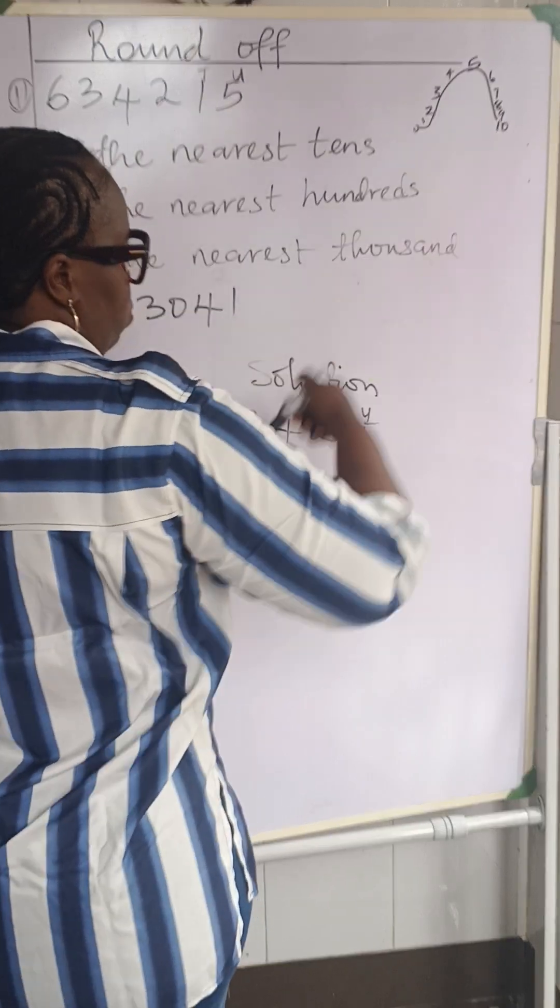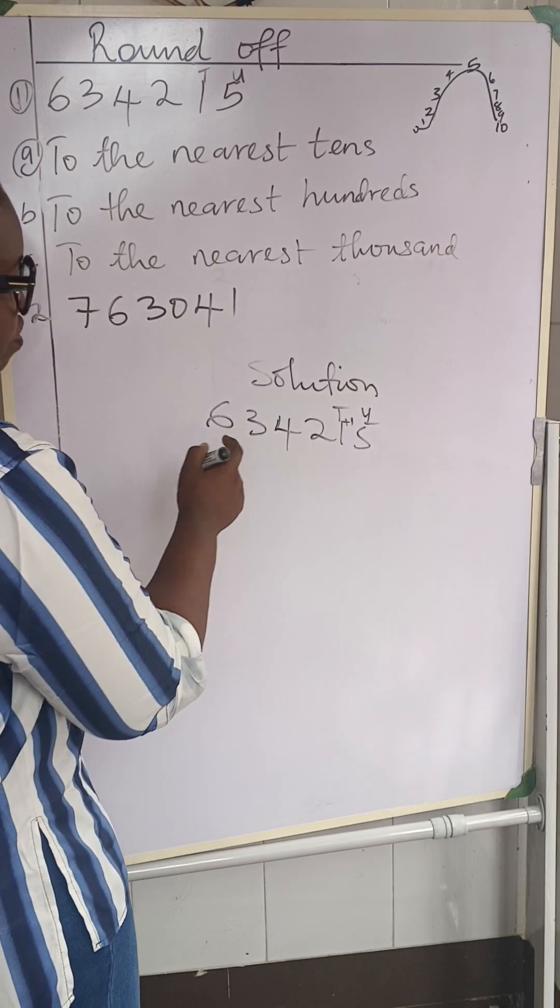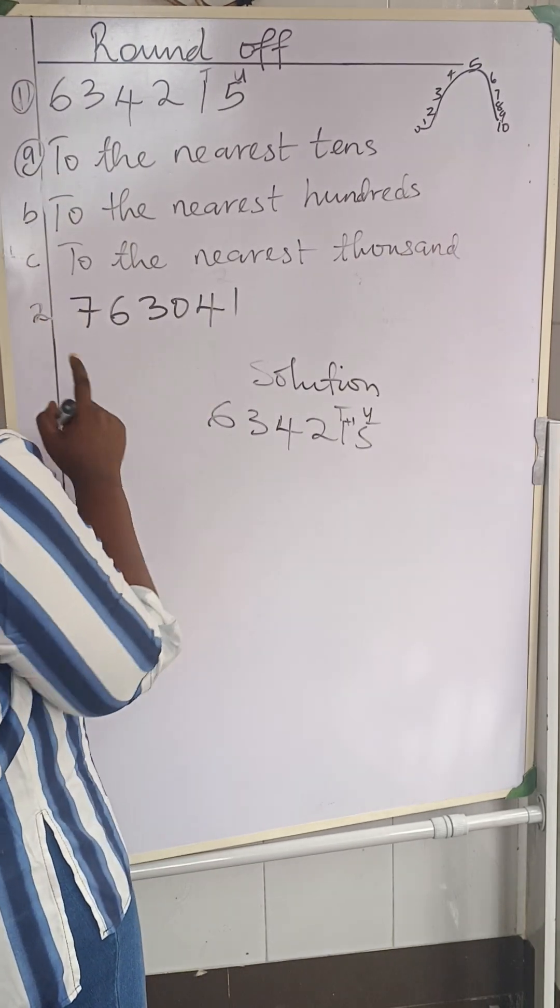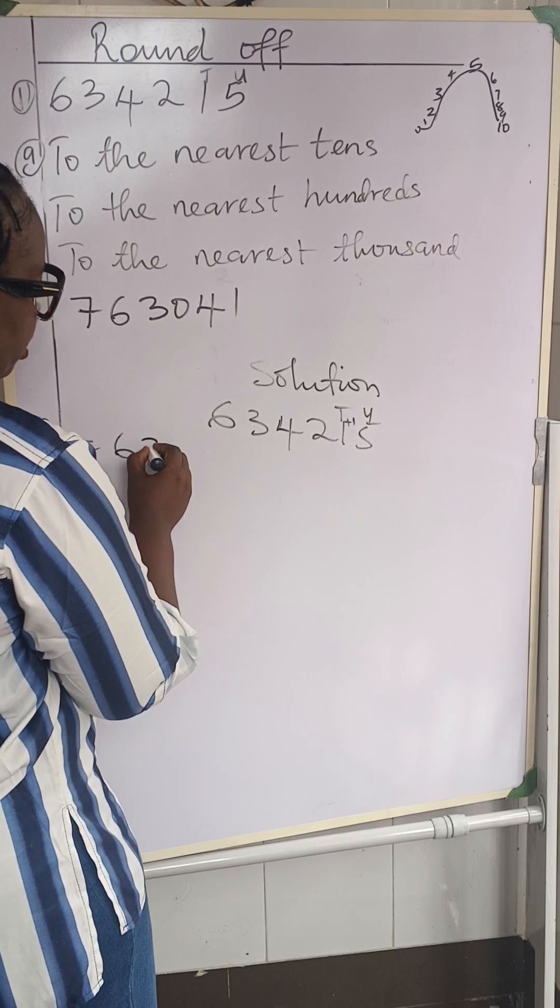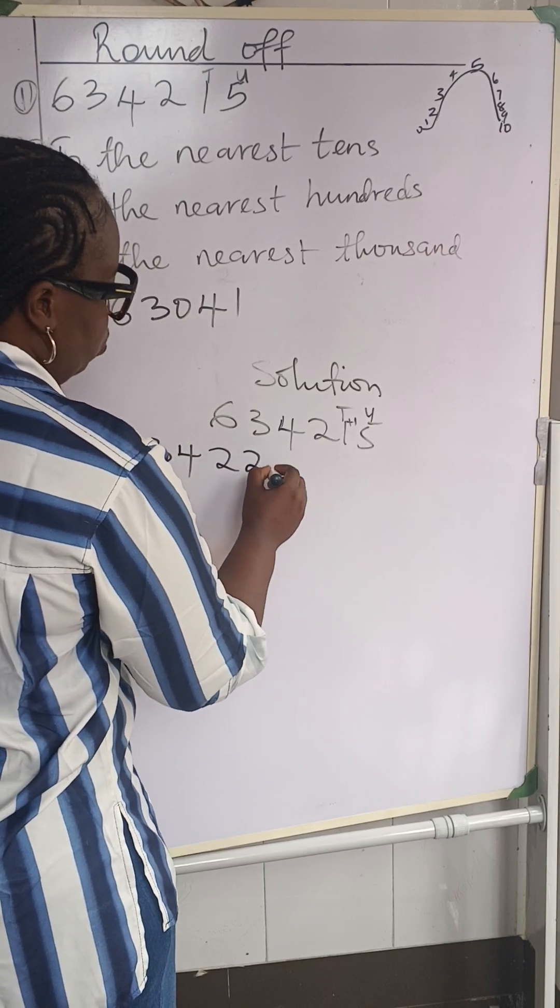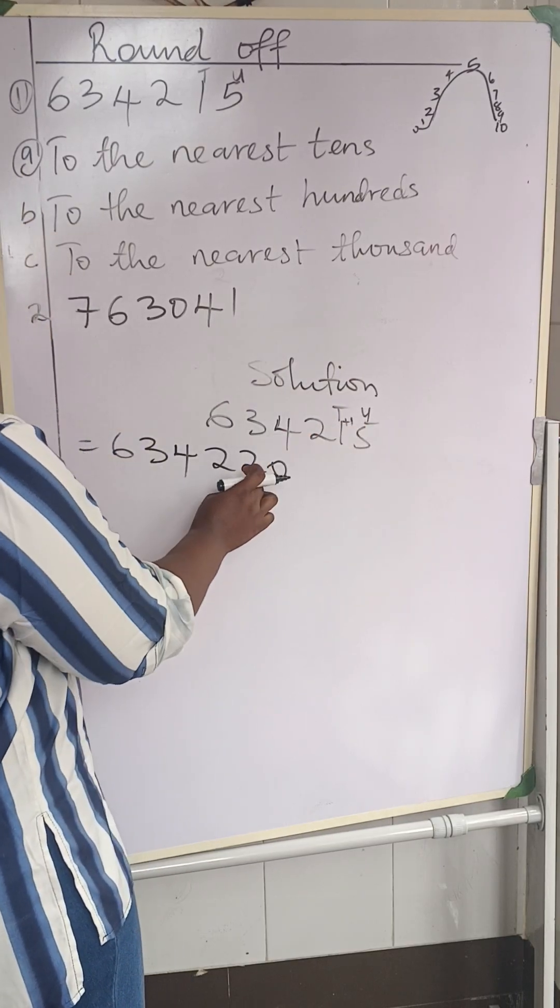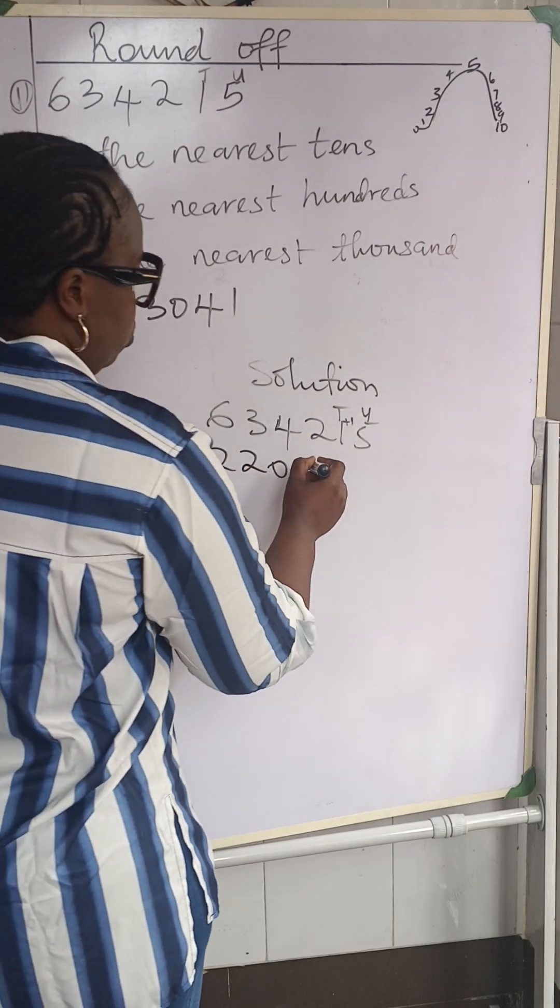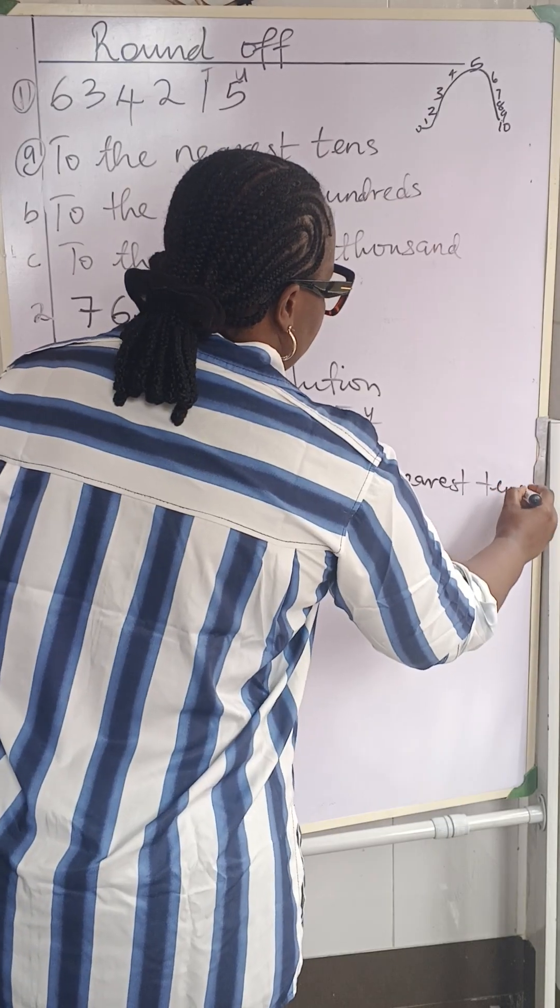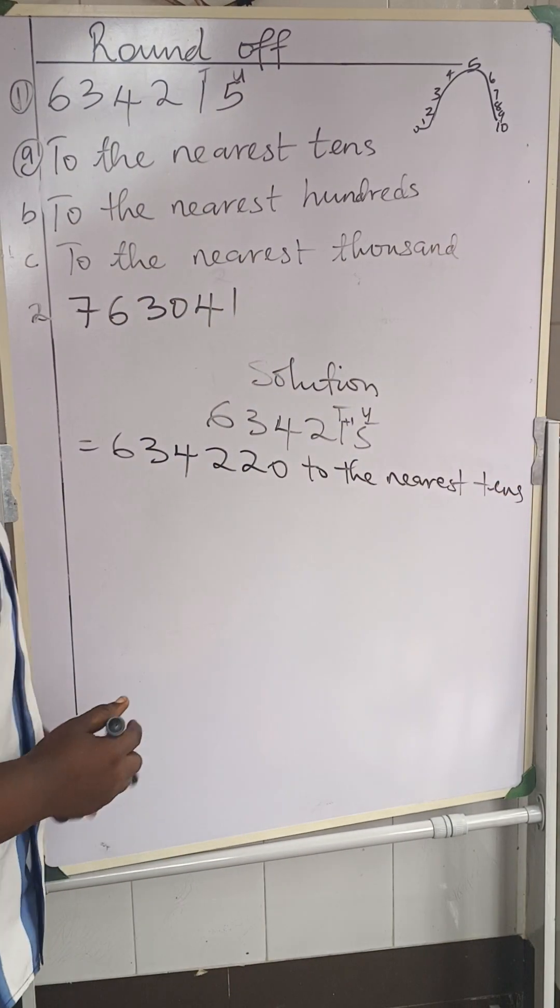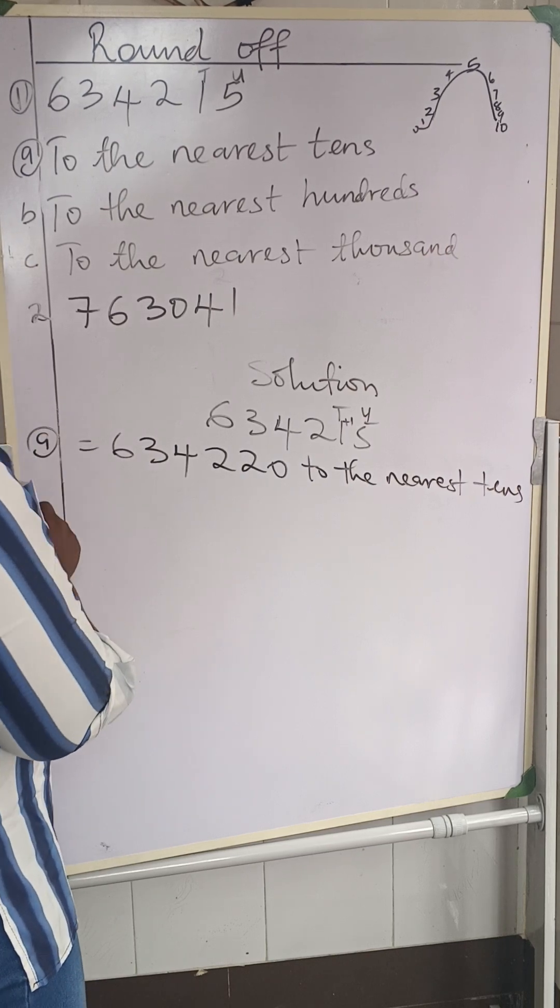Because we are going this way, we add 1 to 1 here. So we are going to have plus 1, which will make it 2. So our final answer is going to be, to the nearest tens, 634,220. We replace the 5 with 0. This one is 1 plus 1, making it 2. So it's going to be 220 to the nearest tens. That is the answer: 634,220 to the nearest tens. That is our A.